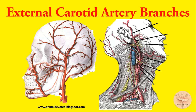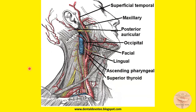Moving from below to upwards, the branches of the external carotid artery are: superior thyroid, ascending pharyngeal, lingual, facial, occipital, posterior auricular, maxillary, and superficial temporal artery.